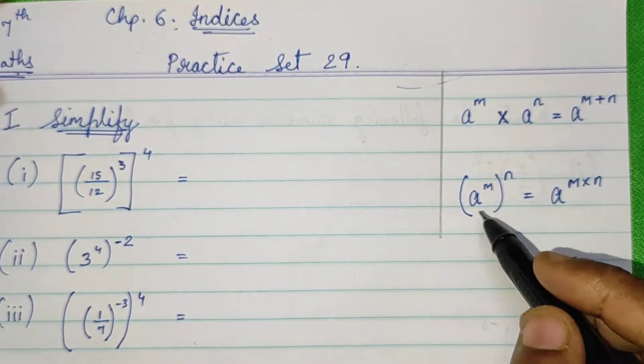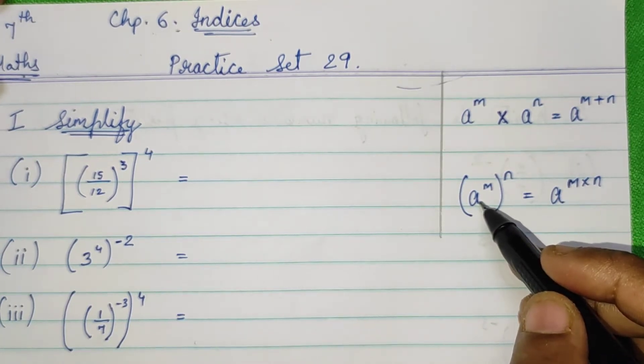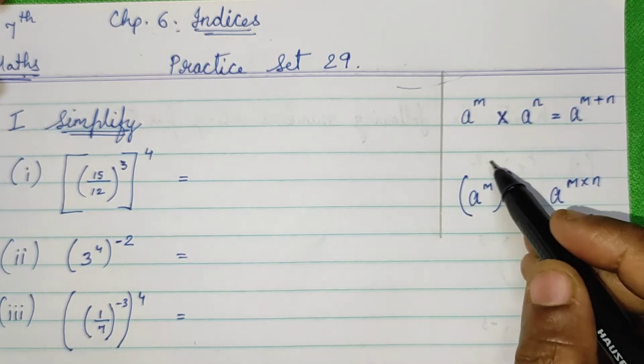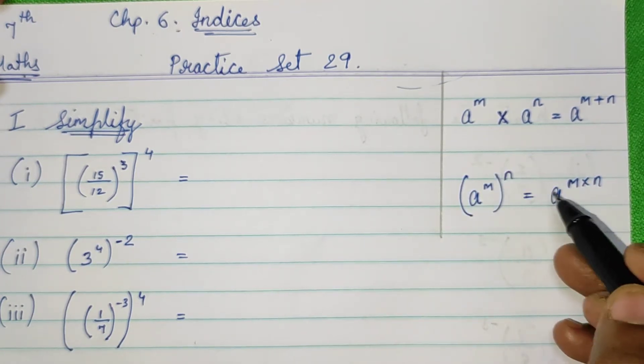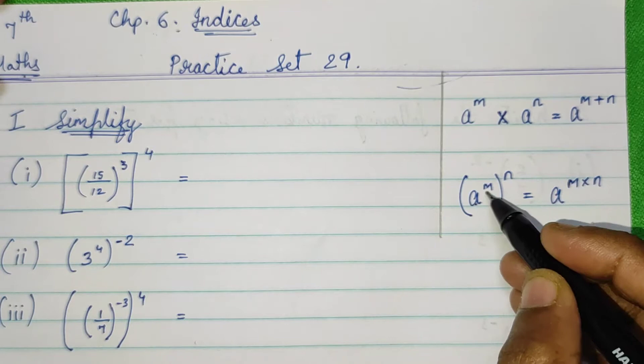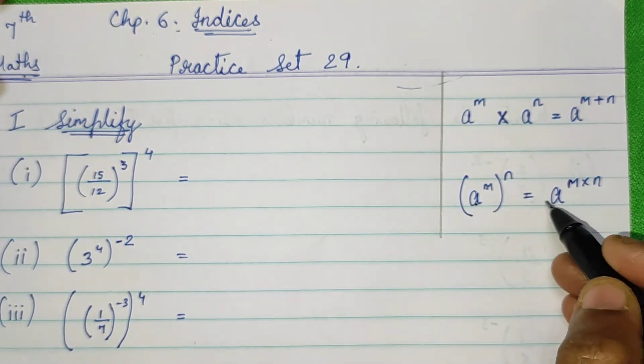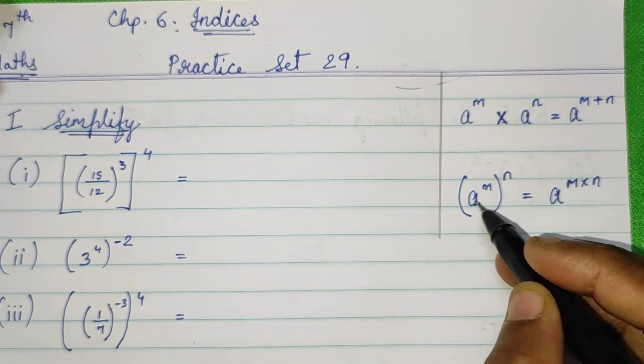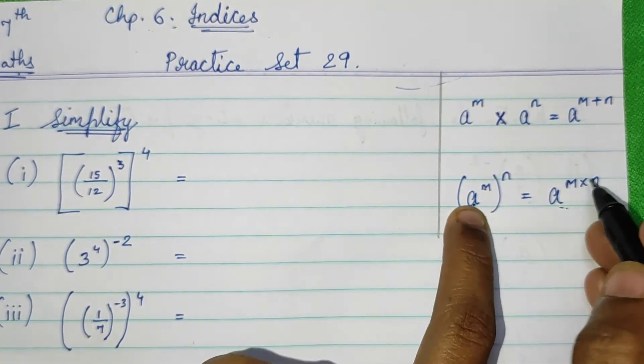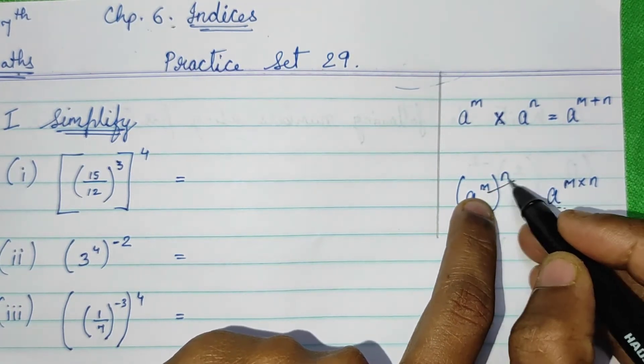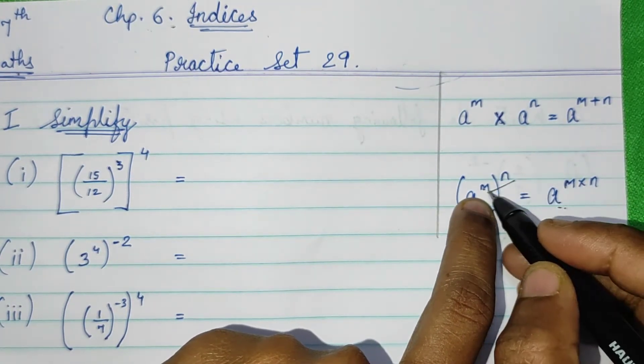Now, what the formula says is that if a raised to m and the whole is raised to n, then what you get? This base a is raised to these two indices multiplication, m into n.